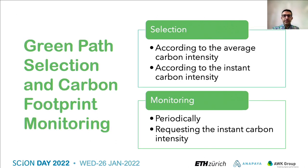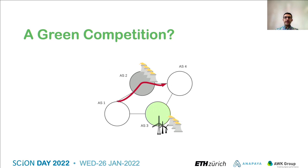An endpoint selects the greenest path to a destination in two steps. First, it selects a set of paths with the lowest average carbon intensities. Then, it selects the one with the lowest instant carbon intensity by requesting the instant carbon intensities of all selected paths from the first step. To monitor the carbon footprint of its inter-domain communications, an endpoint periodically requests the instant carbon intensity of the path it uses to send traffic on and multiplies it by the amount of traffic it has sent since the previous period.